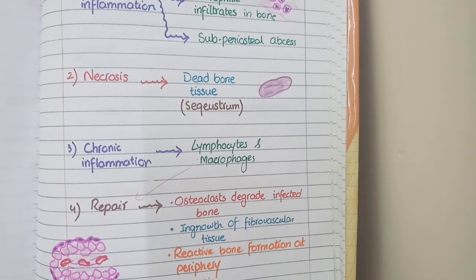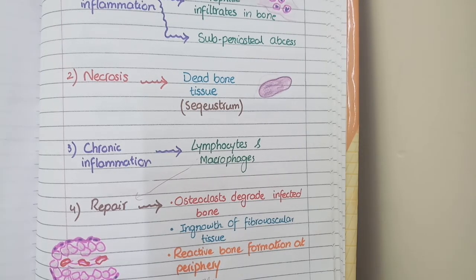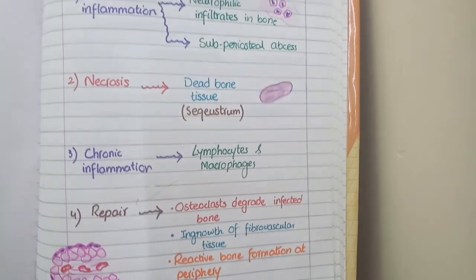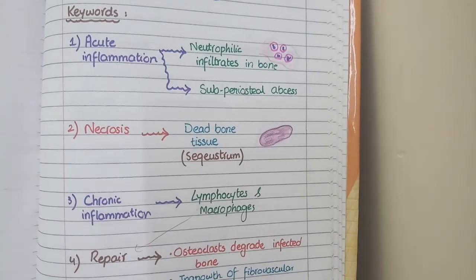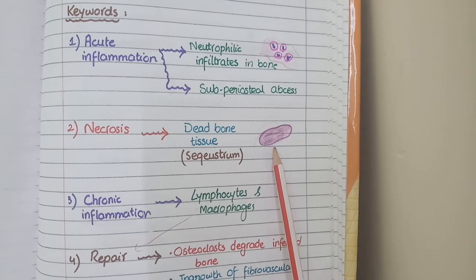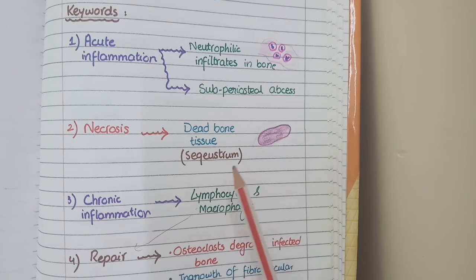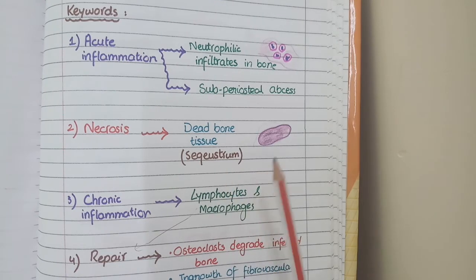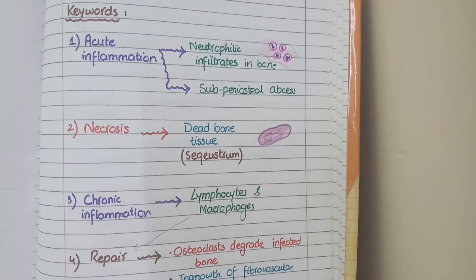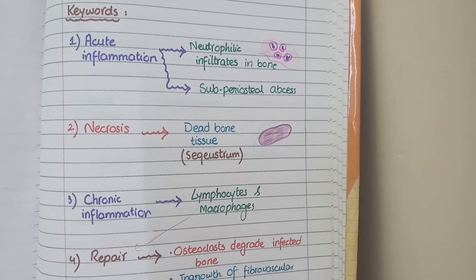If the infection of bone and bone marrow persists for a very long period of time, it is called chronic osteomyelitis. In chronic osteomyelitis there is only one difference to remember: the dead piece of necrotic bone or sequestrum persists, but surrounding the sequestrum there is reactive bone formation. This reactive bone formation that surrounds the sequestrum is called involucrum. So involucrum is a reactive bone formation that surrounds the sequestrum in cases of chronic osteomyelitis.